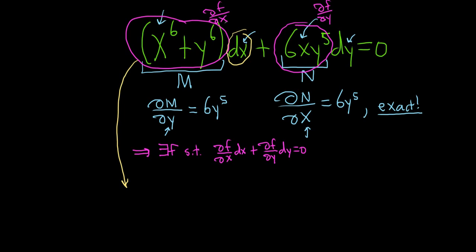So integrating X to the sixth with respect to X, we would use the power rule. So that will give us X to the 7 over 7. Integrating Y to the sixth, we just put an X next to it. So X, Y to the sixth. That's because we treat it as a constant.